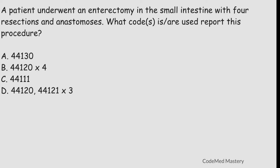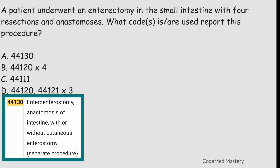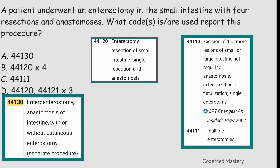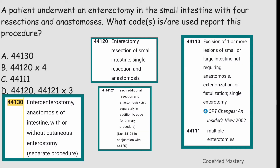Next question: a patient underwent an enterectomy in the small intestine with four resections and anastomosis — what code is used to report this procedure? Option A: 44130 — enterostomy, anastomosis of intestine with or without cutaneous enterostomy. Option B: 44120 multiplied four times. Option C: 44111 — excision of one or more lesions of small or large intestine not requiring anastomosis, multiple enterotomies. Option D: 44120 plus 44121 multiplied three times, where 44121 is for each additional resection and anastomosis.